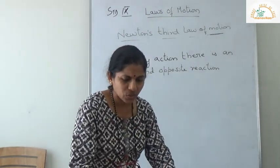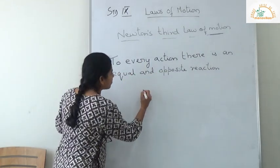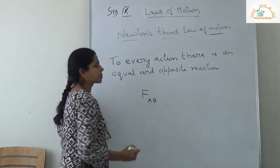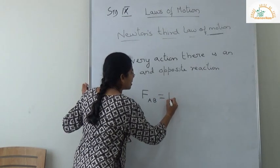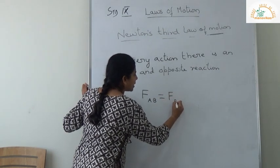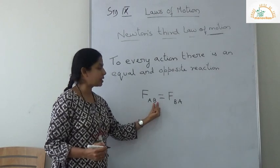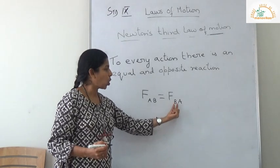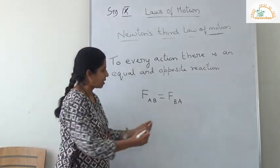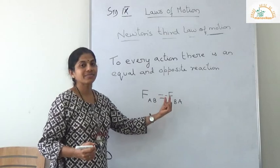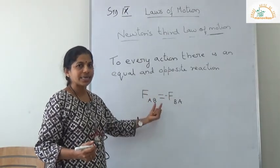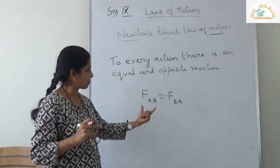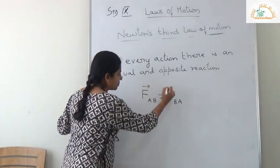Mathematically, you can write it as F_AB equals F_BA. That means the force exerted by B on A will be equal to the force exerted by A on B, with a negative sign. The negative sign indicates that the direction is opposite — they are equal and opposite. So in vector form, you can write it this way, since force is a vector quantity.